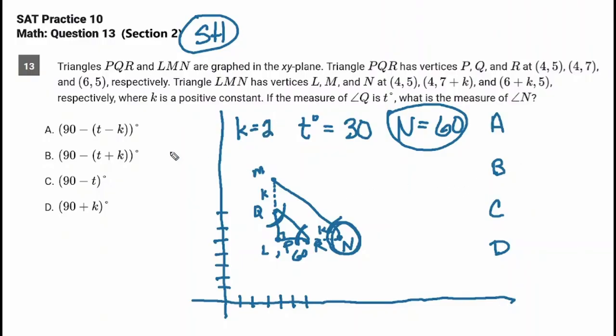All right, so if K is 2, this is 90 minus T minus K. 30 minus 2. 90 minus 28. Okay, you can ballpark that. Is that going to be 60? No.